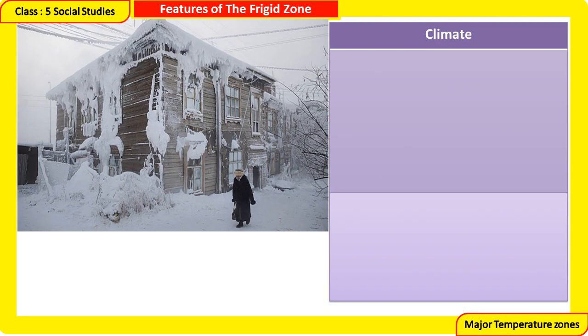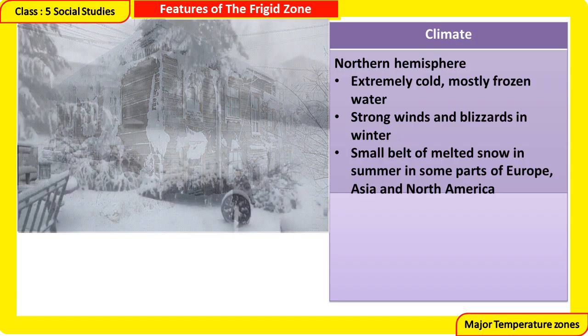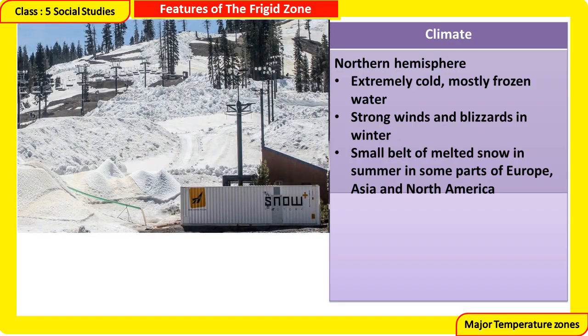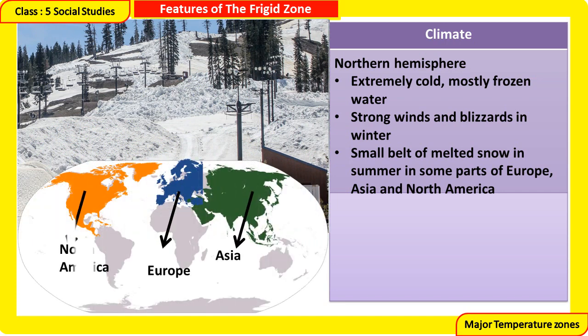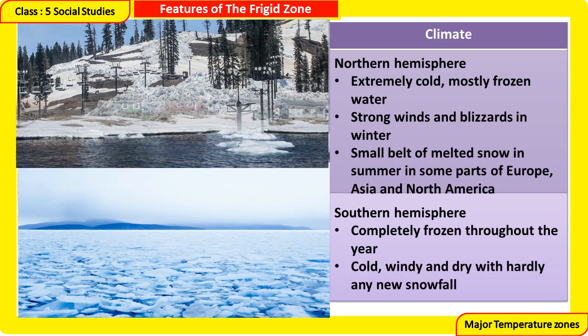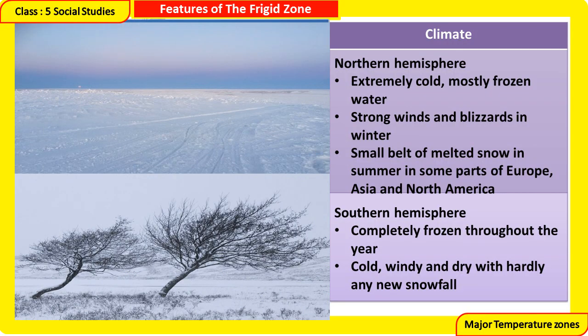Features of the Frigid Zone — Climate: Northern Hemisphere — extremely cold, mostly frozen water; strong winds and blizzards in winter; a small belt of melted snow in summer in some parts of Europe, Asia, and North America. Southern Hemisphere — completely frozen throughout the year; cold, windy, and dry with hardly any new snowfall.